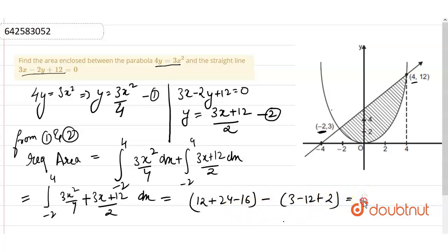By equating it, we get 27 square units. This is our final answer: 27 square units.